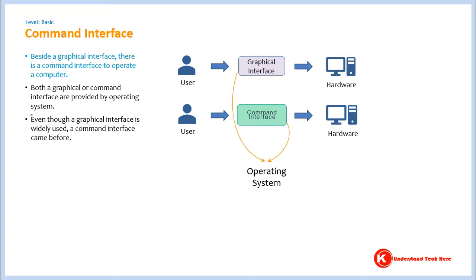Almost all people started doing things in a computer using a graphical interface. One advantage of the command interface is it requires less processing power and memory than a graphical one. Older computers didn't have large processing power and memory, so the command interface would run more easily and smoothly on them. That's why in the beginning, when computers didn't have a lot of processing power and memory, the command interface was widely used.